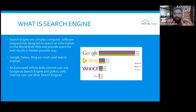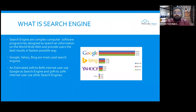If you search, this complex software can find information within a millisecond and show you results within a millisecond. You can use search engines like Bing, Yahoo, AOL, but 70 to 80% of internet users generally use Google.